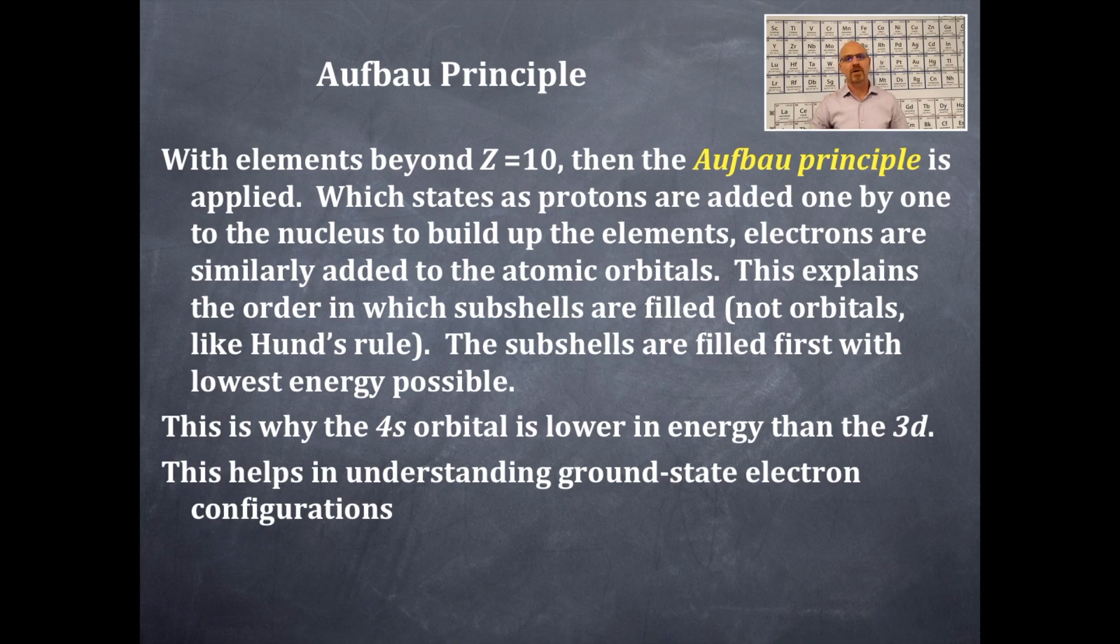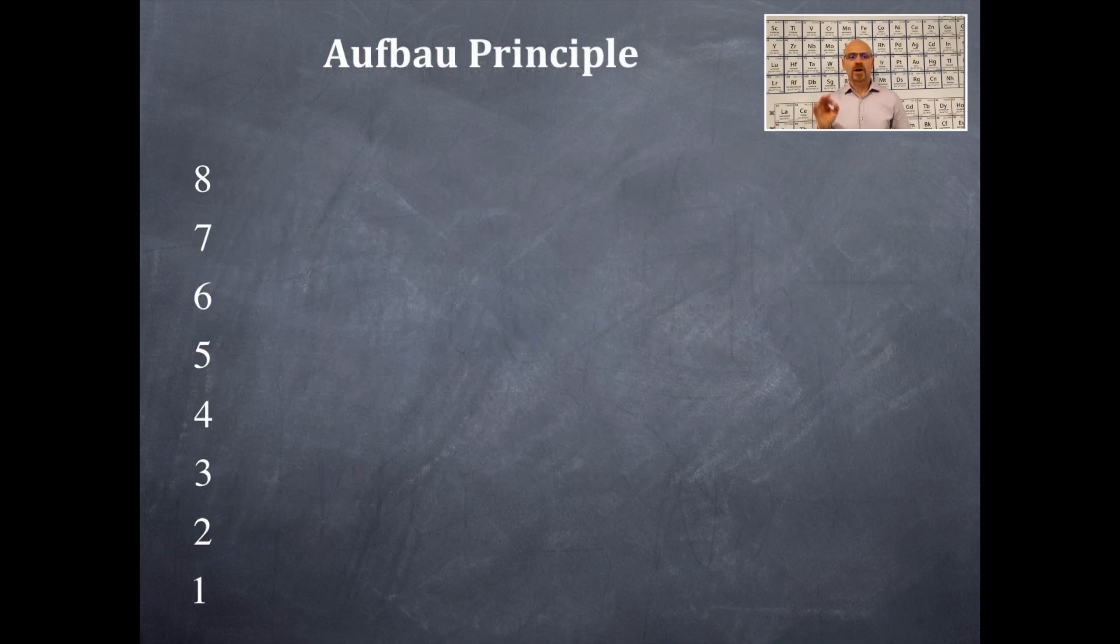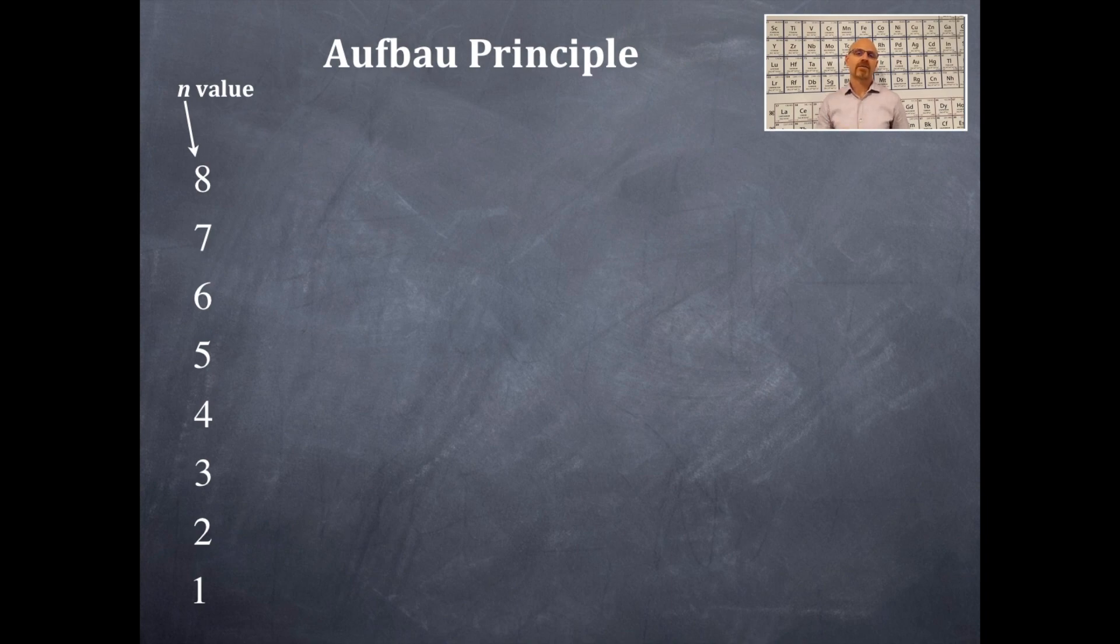There's a little table here. Let's give this one a try. Right over here are the values of n, that's the principal quantum number. I've got them going from the bottom to the top. And then here at the top row, I've got values of L, that is designating the type of orbital. And then we're going to fill this in.